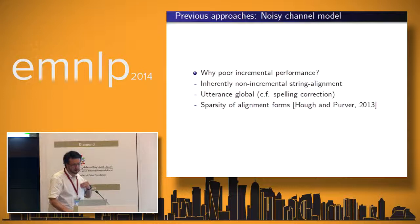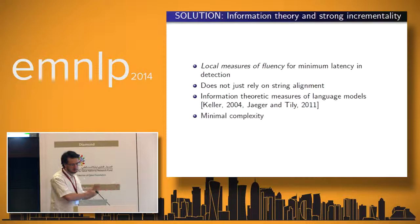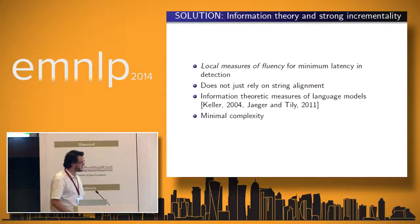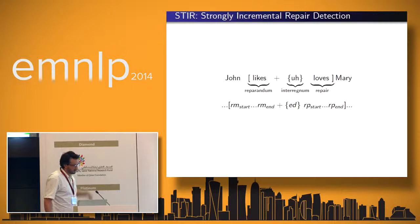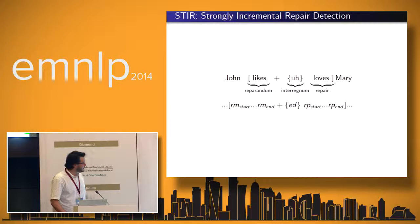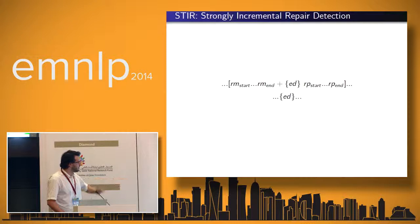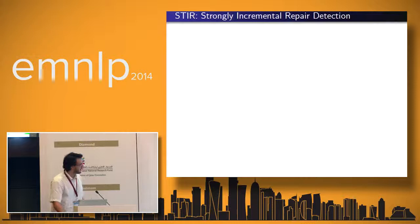Instead, I'm going to propose using local measures of fluency to improve latency and speed of detection. This does not rely on string alignment but instead on information-theoretic measures of language models, in line with the information density approach to language processing, and it's minimally complex. To overview our system, we're going to detect the boundary points of the reparandum, interregnum, and repair, and also detect edit terms on their own which are not part of a repair structure.